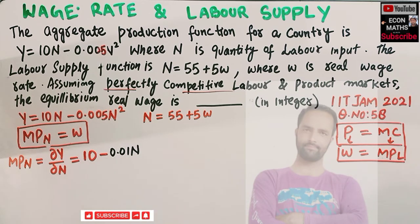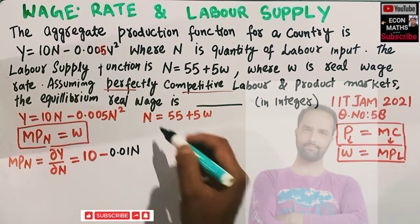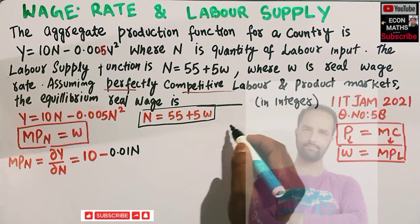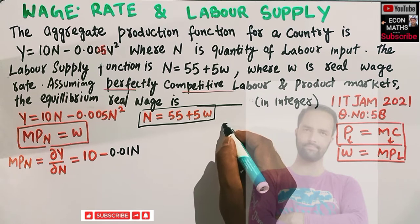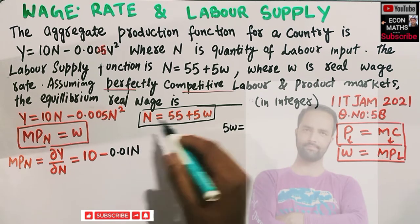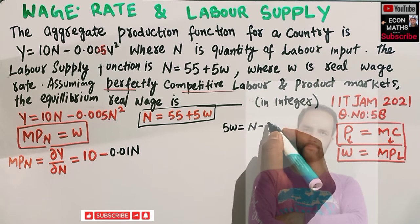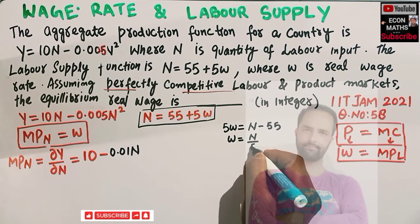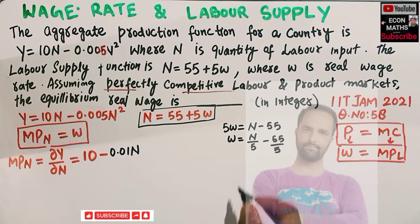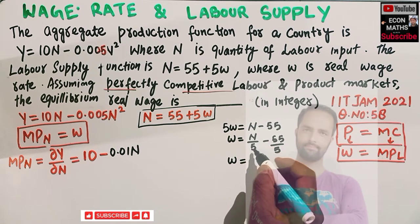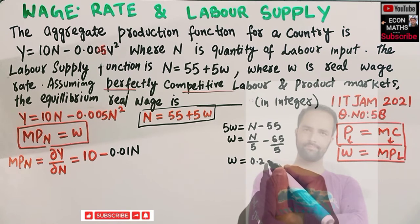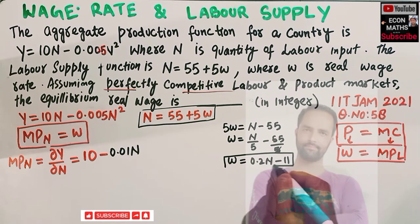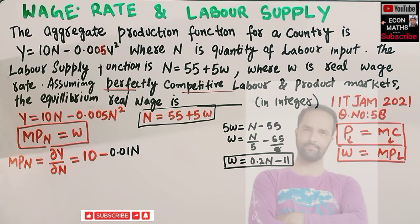Now for the labor supply, let us solve for the wage rate. We have n = 55 + 5w. Transposing: w = (n - 55) / 5, which gives us w = 0.2n - 11. So our MPL = 10 - 0.01n, and our wage rate from labor supply is w = 0.2n - 11.